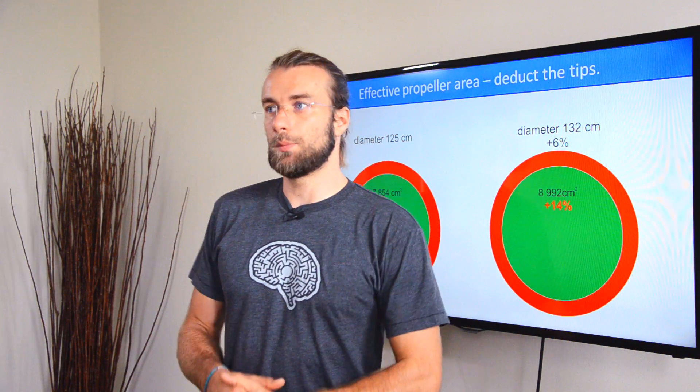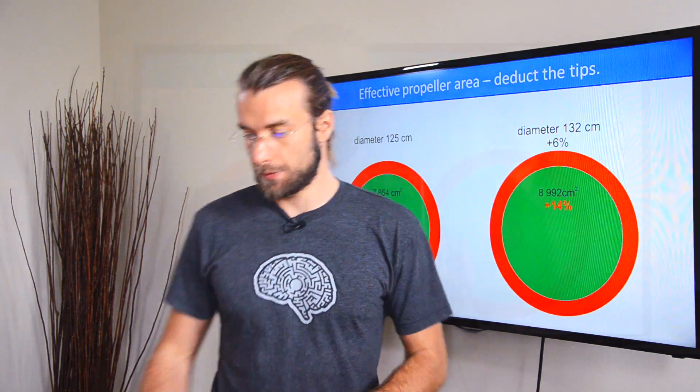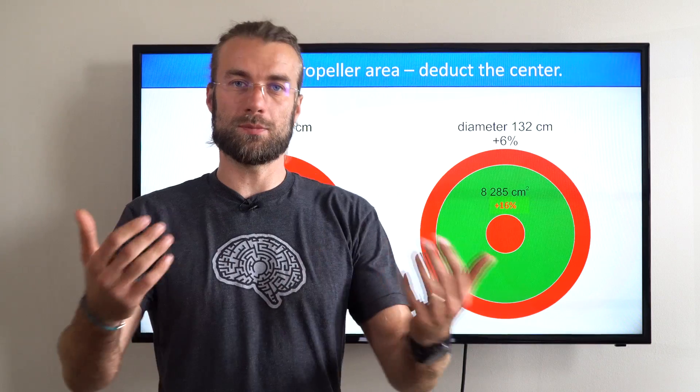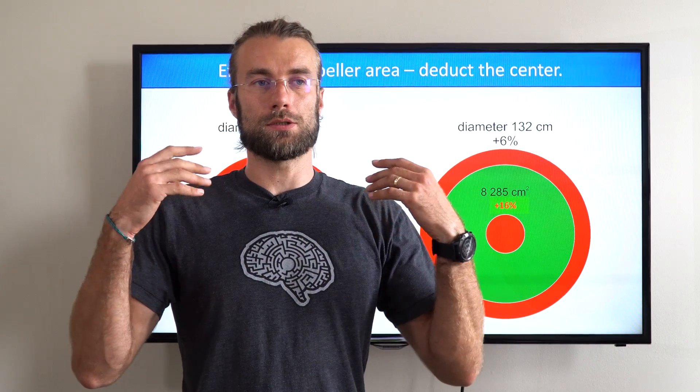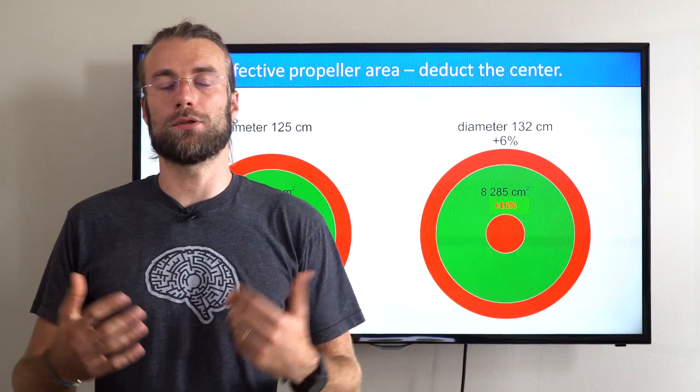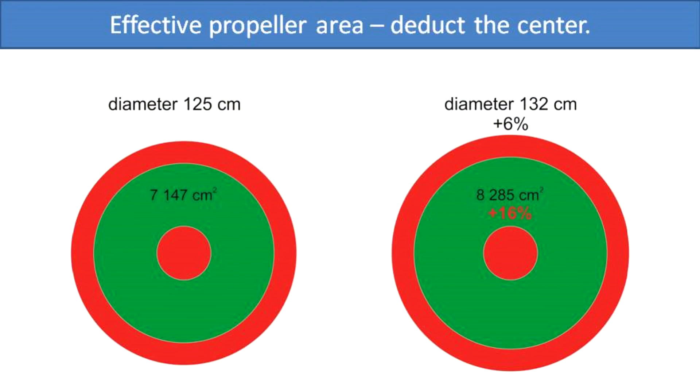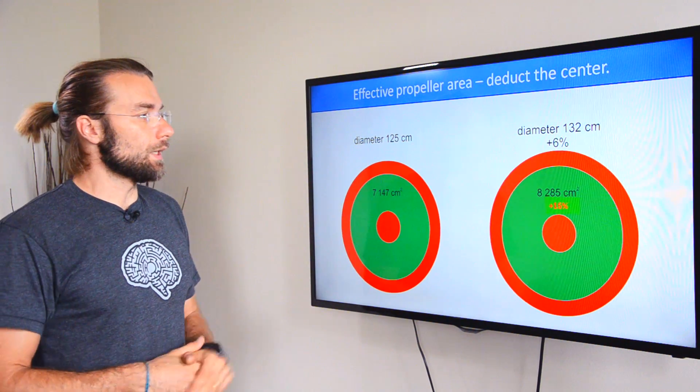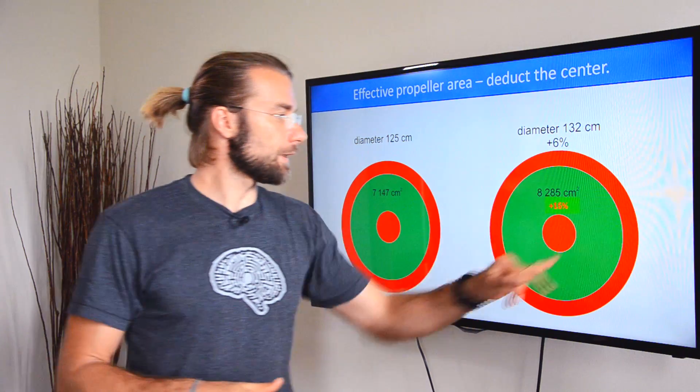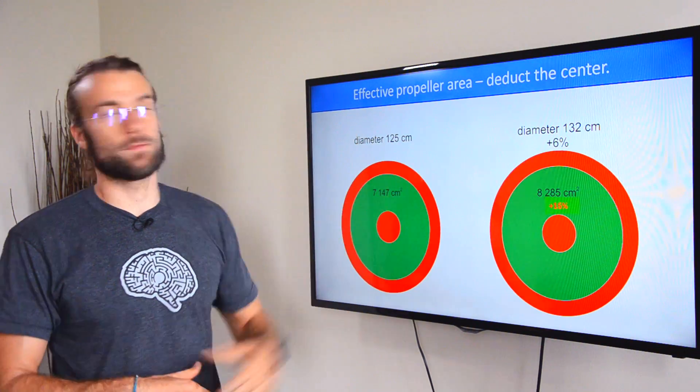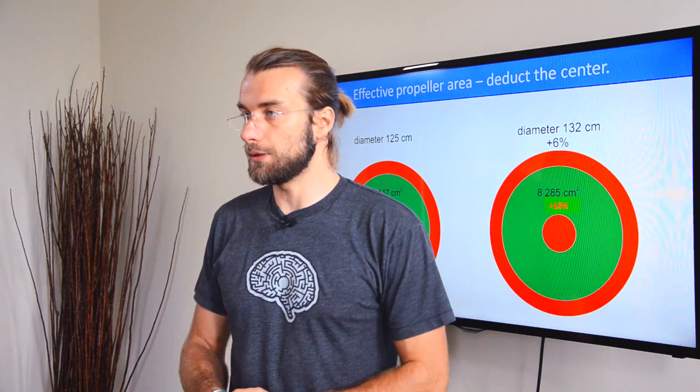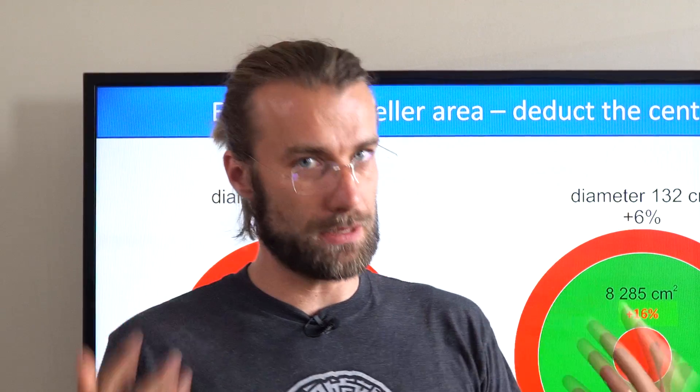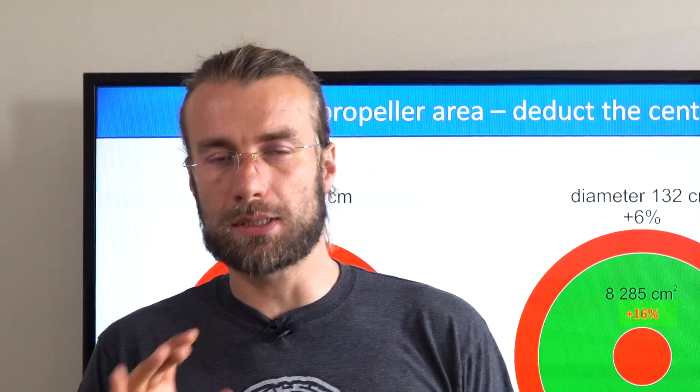So this is how it's going to look. Let's assume roughly 10 cm on the tips are useless. They only create vortices. You need to have them, but they are not generating thrust. In this case, suddenly, the difference between a larger prop and a smaller prop is 14% of the effective area. This is not the end of the story, because also the center part of the propeller is useless. The center part is where you have the bolts, the speed of rotation is very low, it's behind the engine in sort of a shade behind your pilot, doesn't get really good airflow. Probably it's even larger than on my drawings.